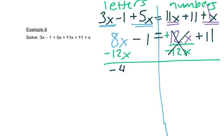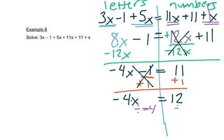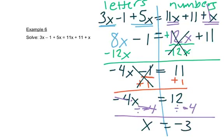8x minus 12x is negative 4x. Then we've got this minus 1 on the letter side — it doesn't have a letter, so we want to move it. We'll do plus 1 on both sides. So we have negative 4x; that canceled out, and 11 plus 1 is 12. Finally, this is multiplication, so the opposite of multiplication is division — we'll divide by negative 4. That cancels out, leaving x on the left, and 12 divided by negative 4 is negative 3.